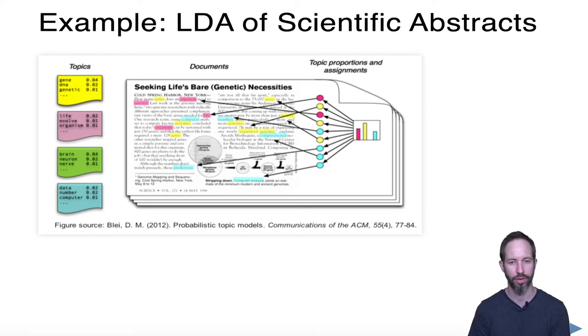If we created our document term matrix, which we learned about in the basic text analysis class, and applied a cluster analysis like k-means, we would have each scientific abstract belong to one unique cluster. What Blei and his colleagues realized is there's a lot of in-betweenness, and when we force things into a single category we lose a lot of that information. They certainly weren't the first to develop mixed membership models but were among the first to think about it in text analysis and natural language processing.